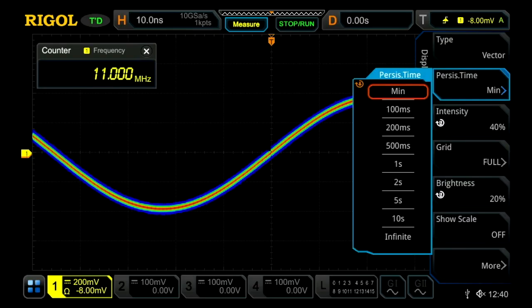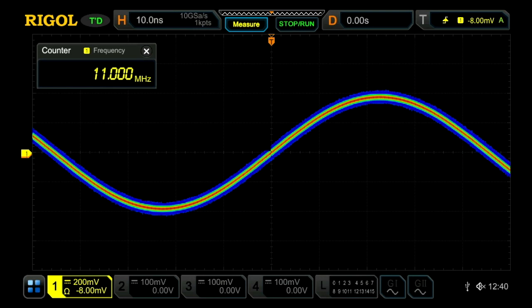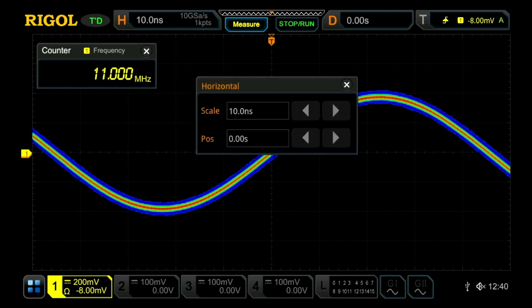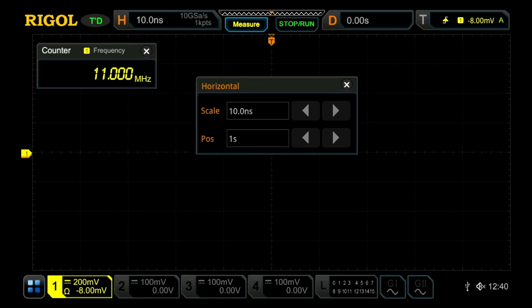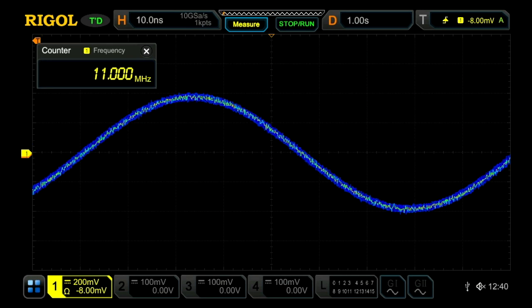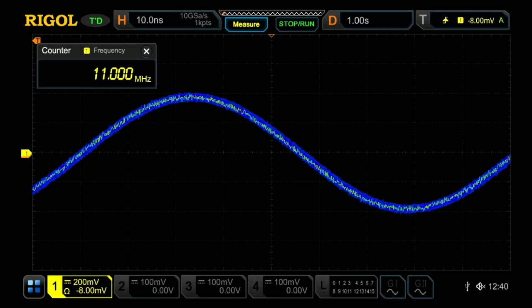I'm going to turn the persistence on to infinite so we can see the jitter of that signal. Now we're going to move the trigger delay out to one second. We're looking at the results one second after the trigger, so any jitter in the sampling is going to show up here.